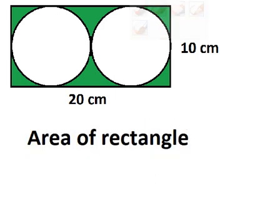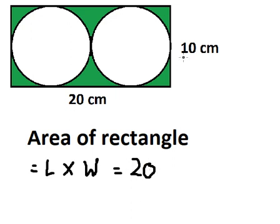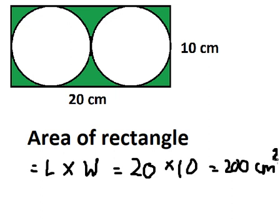That should be the length multiplied by the width. This is the length, this is the width, and you got 200 square centimeters. Next, we need to find the area of the circle.